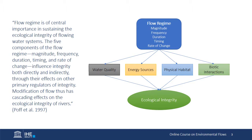Together, these components of the flow regime influence the main components of ecological integrity: water quality, sources of energy, physical habitat, and biotic interactions. These factors are also characteristics of habitats across different river scales, so many of the habitat concepts from the former lecture apply here as well, only embedded in a larger conceptual context.